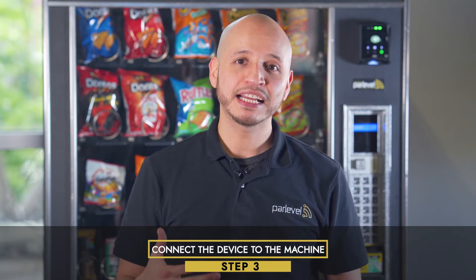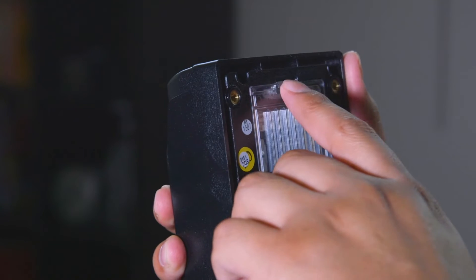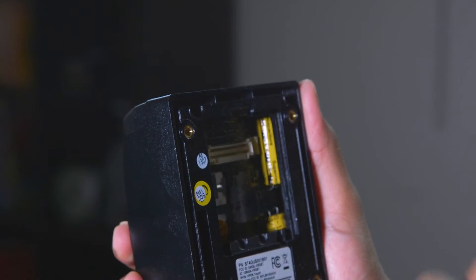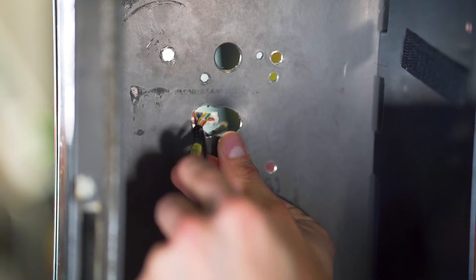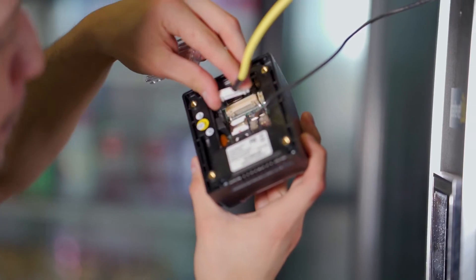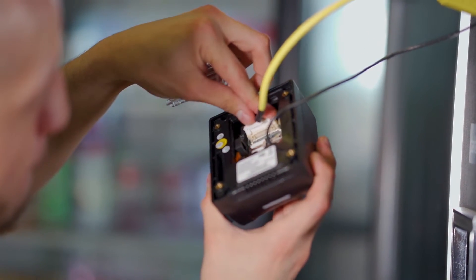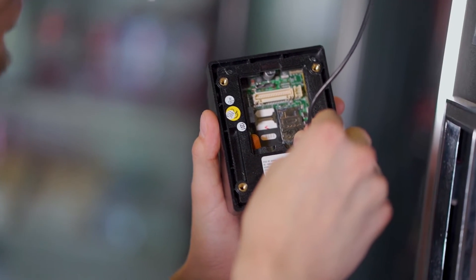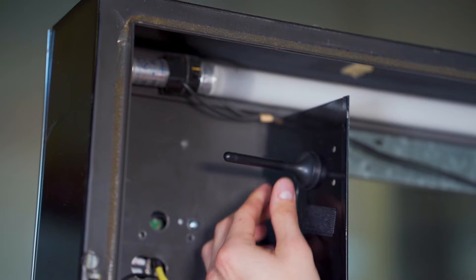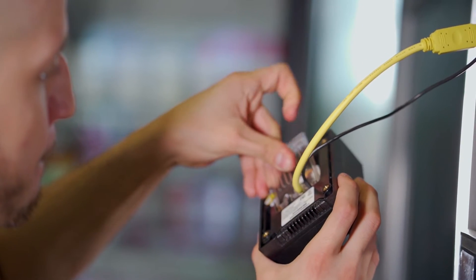Step 3, connect the device to the machine. Remove the rear cover for the PayTouch, route the cabling through the machine, then connect the PayTouch 40 pin MDB cable and antenna to the back of the device. You can mount the antenna to the inside of the machine or the outside of the machine. Secure rear cover back onto the device.